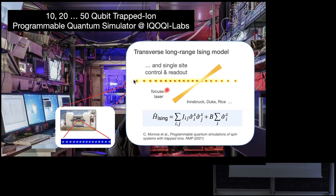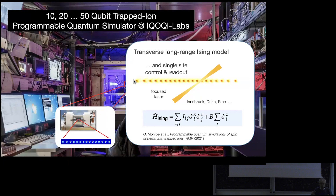From last time, we have this ion trap lab. Basically it's a string of ions: you can individually address them, prepare spins up and down, and then switch on the Hamiltonian between these ions, which is the Ising Hamiltonian. The Ising Hamiltonian with long-range interaction arises because if you shine a laser on a string of ions with spin up and spin down, you make a spin-dependent distortion of the crystal.